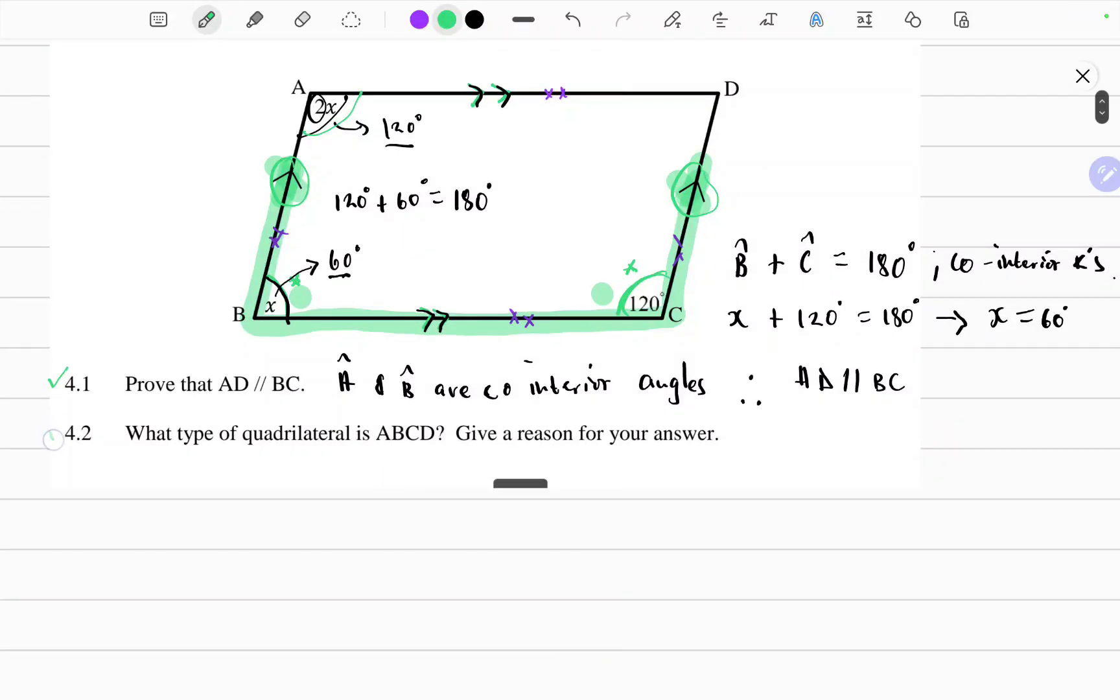So the second question 4.2 reads as follows. What type of quadrilateral is ABCD? Give a reason for your answer. There are six criteria that can be used to prove that a certain quadrilateral is a parallelogram. And the most obvious one in this case is it has two pairs of opposite sides.